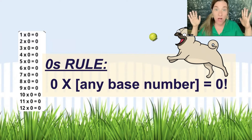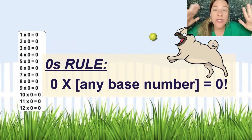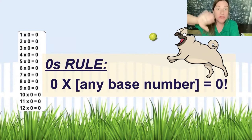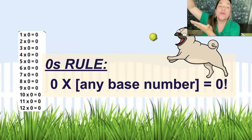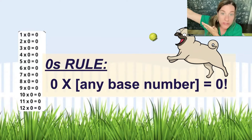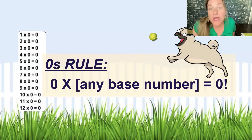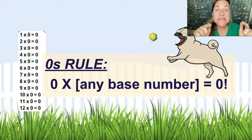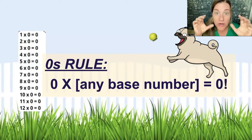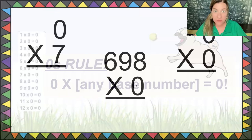This is the easiest rule because you can use it for the whole rest of your life — into middle school, high school, college, and your career. Zero times any base number equals zero, 100% of the time. It will never be wrong. Easiest rule on earth. Let's look at some examples.